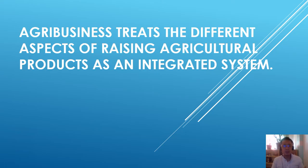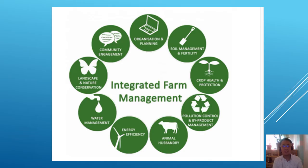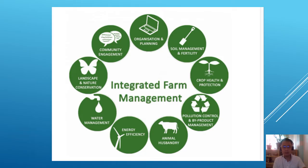This diagram shows how agribusiness integrates each component. It includes soil management and fertility — ensuring the soil is rich in important elements necessary to produce healthy crops — as well as crop health and protection, pollution control and by-products management, animal task boundary, energy efficiency, water management, landscape and nature conservation, and community engagement, organization, and planning. This illustrates how integrated agribusiness management is.